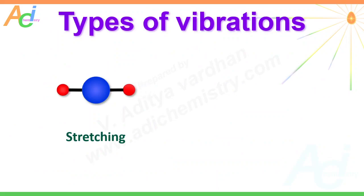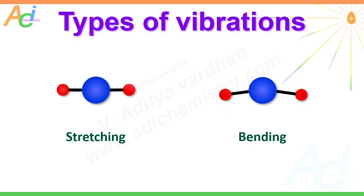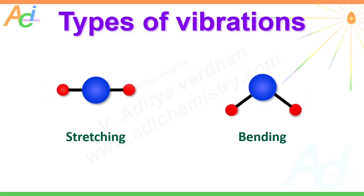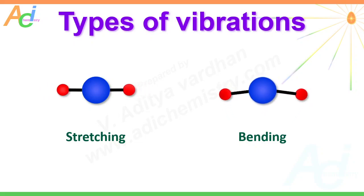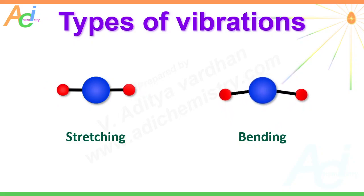The vibrations in molecules are basically of two types: stretching and bending. In stretching, the bond length is altered without any change in bond angle. In bending, there is a change in bond angle; however, to maintain the center of mass, bond lengths may be slightly altered during bending vibrations. These are subdivided into other categories that we will deal with in this presentation.